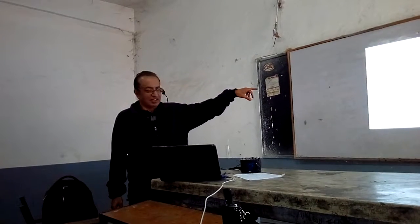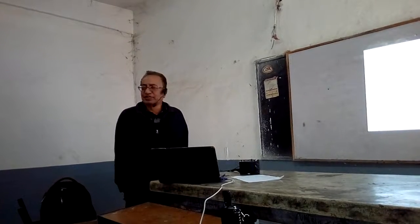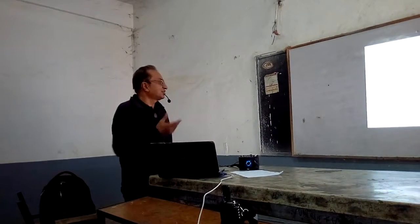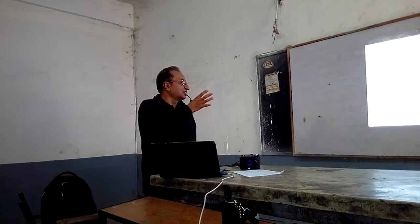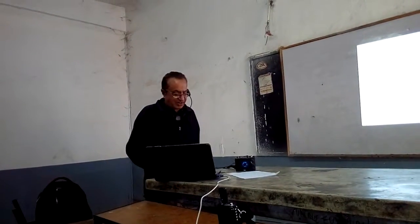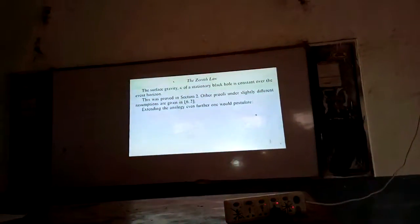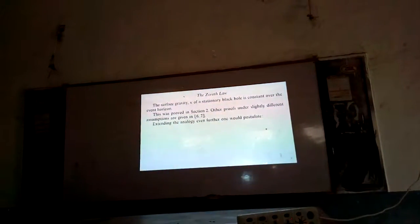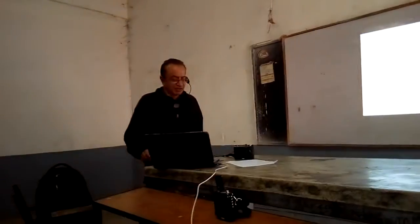The kappa, which is called the surface gravity, is analogous to temperature. The surface gravity is analogous to temperature, and this is a general equation for a rotating black hole, so it has rotational energies and things like that for the internal energy. Then the zeroth law — thermodynamic equilibrium — that the surface gravity is constant over the event horizon.